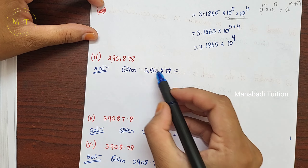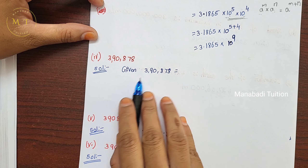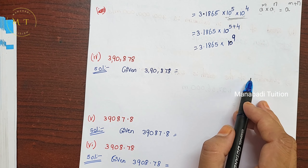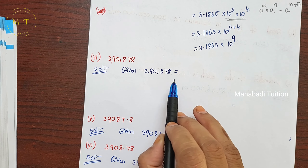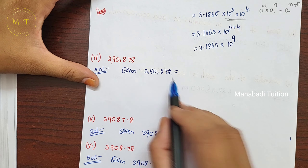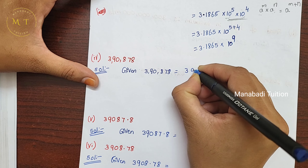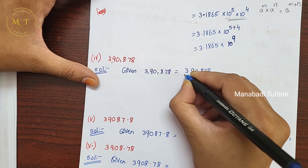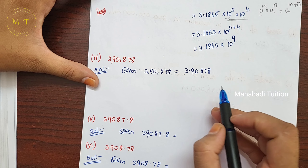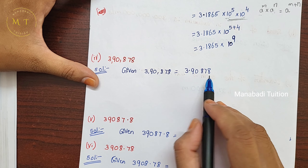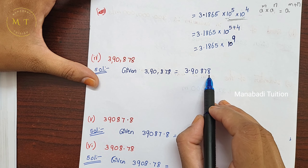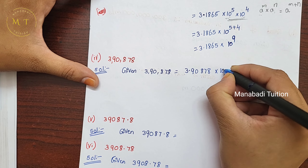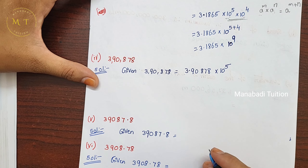Next, fourth one. Here the zeros on the right side after the number are considered. We write the number first — since it starts with 0, we place the point after 1 digit. Count the digits before the point: 1, 2, 3, 4, 5. There are 5 digits before the point, so we write 10 power 5.